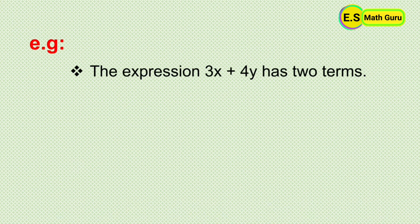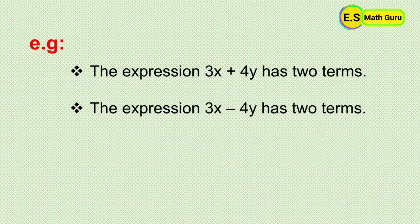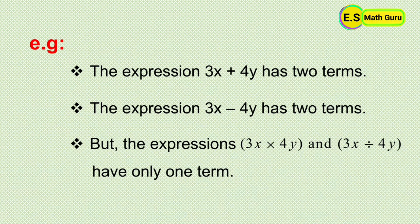For example, the expression 3x plus 4y has two terms because they are separated by the plus sign. The expression 3x minus 4y has two terms separated by the minus sign. But the expressions 3x into 4y and 3x divided by 4y have only one term each, because multiplication and division signs do not separate terms.